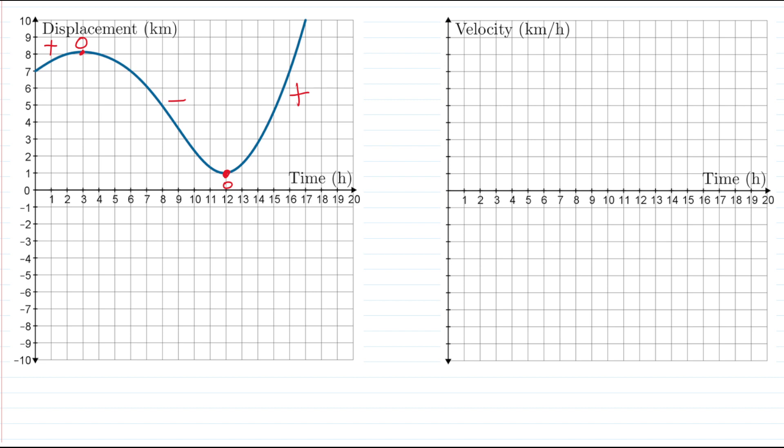Now how do we take these ideas and transfer them over to our velocity time graph? Well, let's start with the points for which we actually have values that is where our slope is zero. And that happens at a time of three hours and a time of 12 hours.